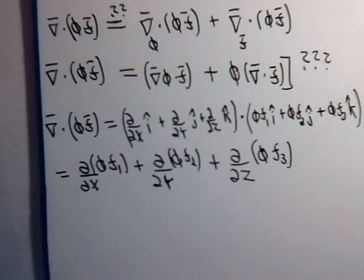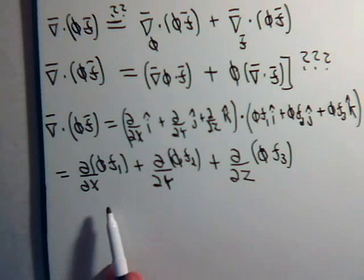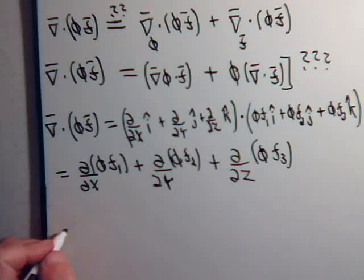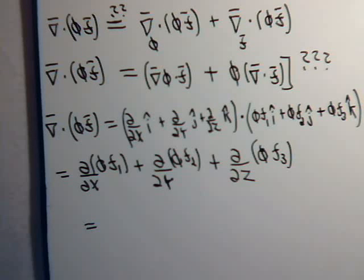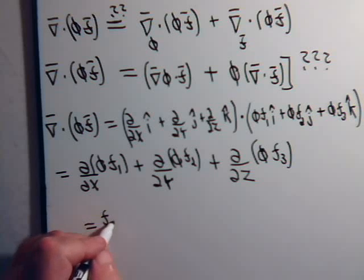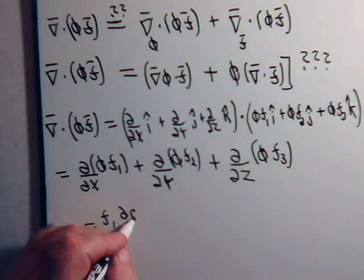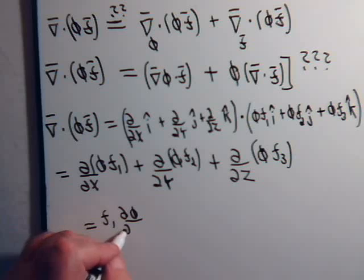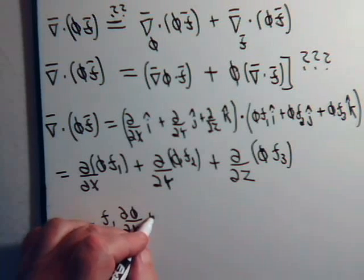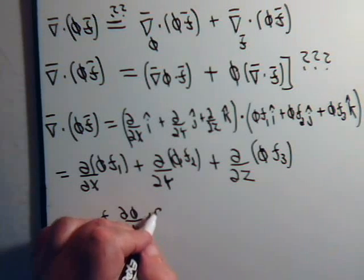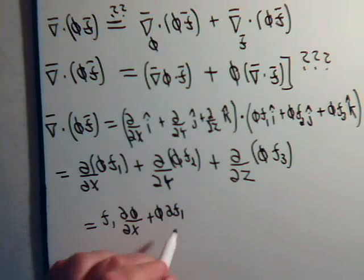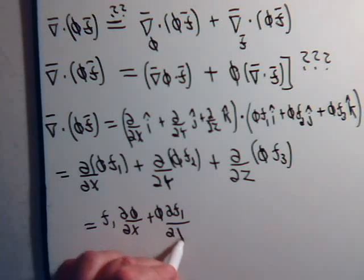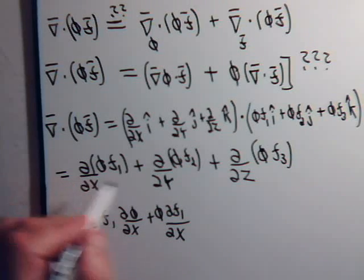And we can break these apart, so this is going to be equal to, here then we're going to have f1 times the partial of phi with respect to x plus phi times the partial of f1 with respect to x. That's from this term.